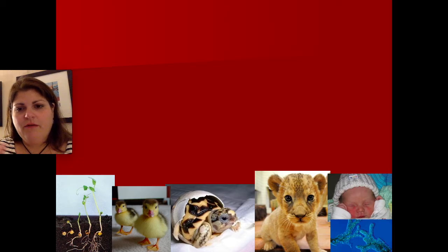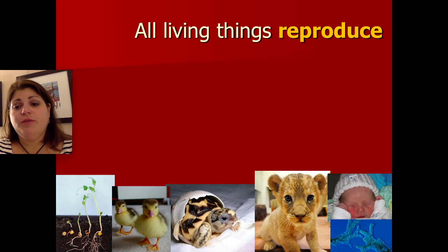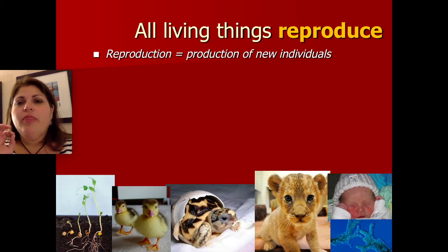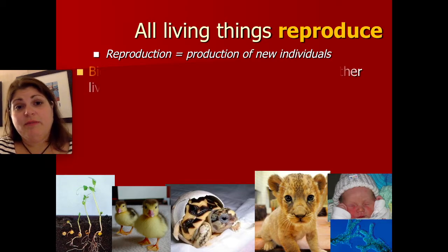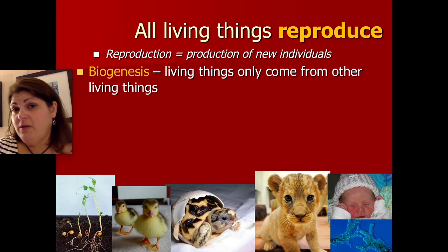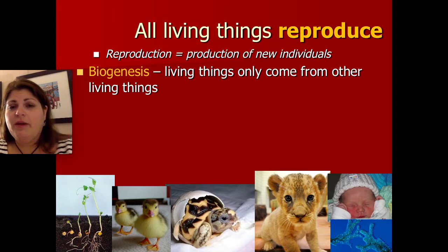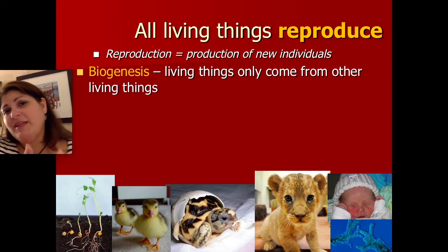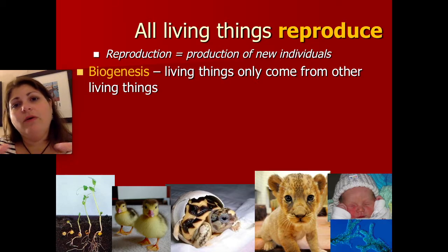Our first characteristic of life is that all living things reproduce — meaning making new individuals. The better way of phrasing this is that all living things exhibit a phenomenon known as biogenesis, or the idea that life only comes from other living things. The only way to get a human is to be born from a human. The only way to get a dog is to have a dog in the first place. The only way to have a cell is to come from an existing cell. Biogenesis literally means life origin.